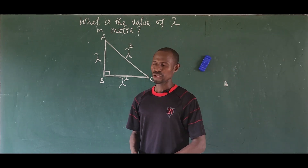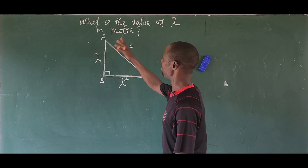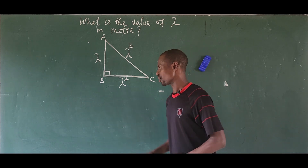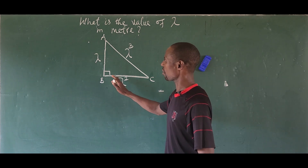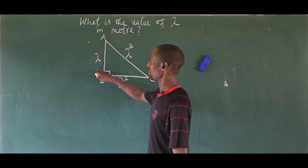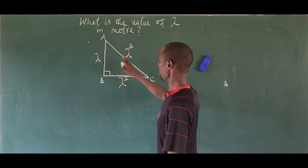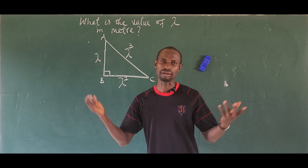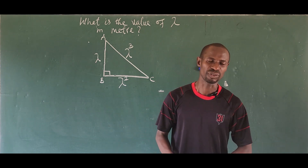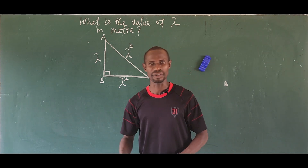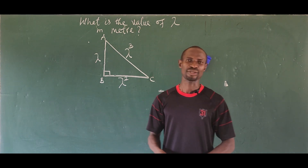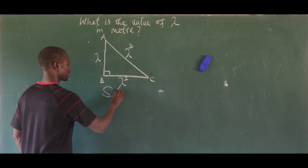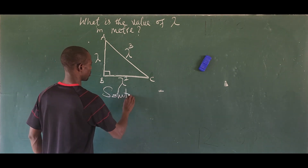BC is given to be lambda squared. So what is the value of lambda in meters? We want to solve for the value of each side — in other words, we're looking for the value of lambda. So how do we solve this?